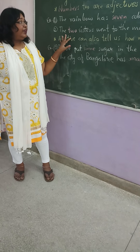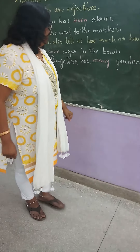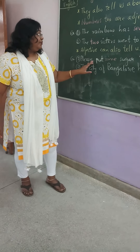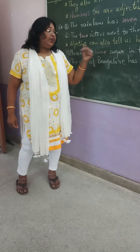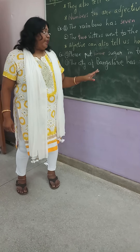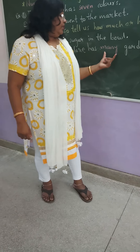So, adjectives, describing words — they also tell us how much and how many things there are. For example, please put some sugar in the milk; the word some describes the sugar. Bengal has many gardens; so many describes the gardens. So, children, learn what describing words are. Next period, we will solve some exercises of this lesson. Thank you.